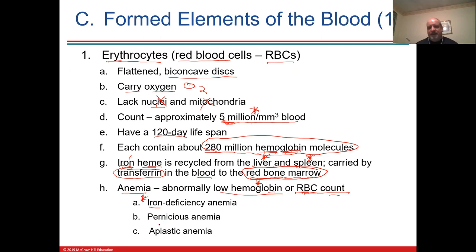Veins are still carrying 75% oxygen on hemoglobin, even though they're called deoxygenated and appear blue. Pernicious anemia is deadly because you need vitamin B12 for erythropoiesis in the red bone marrow. Lack of vitamin B12 can lead to pernicious anemia.